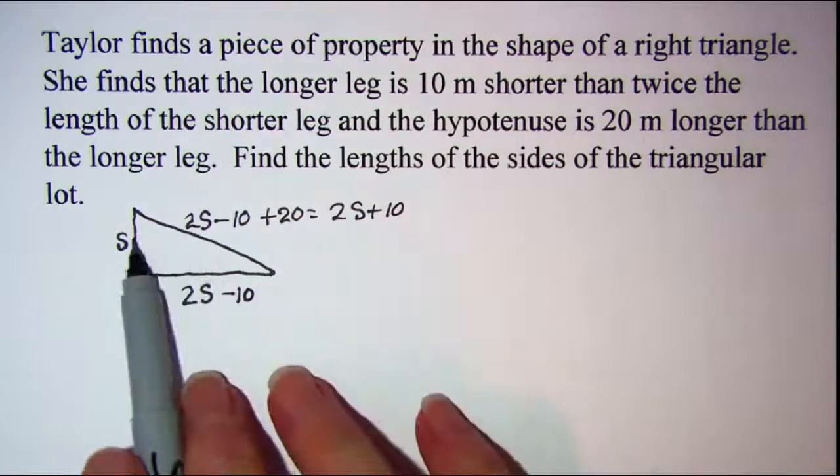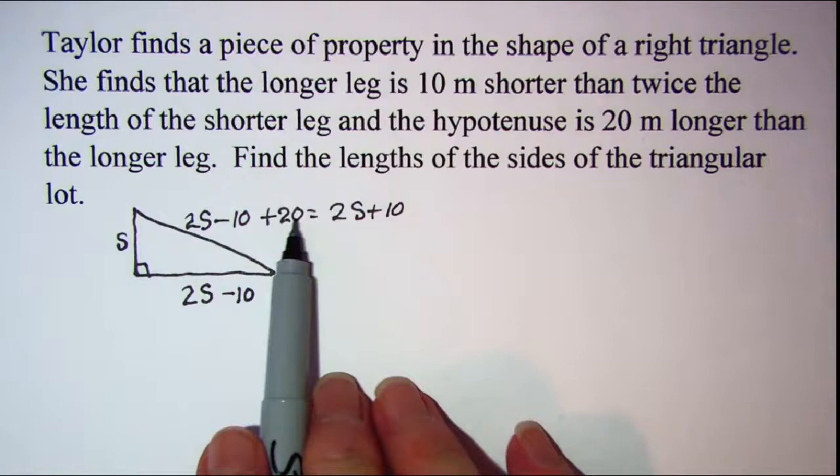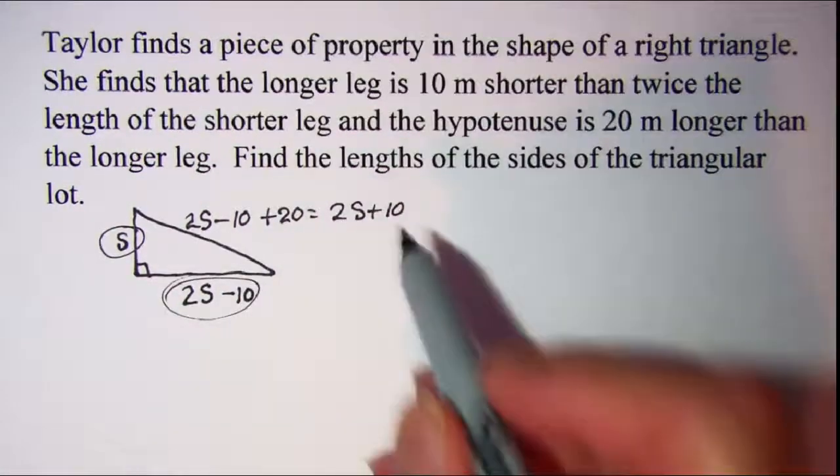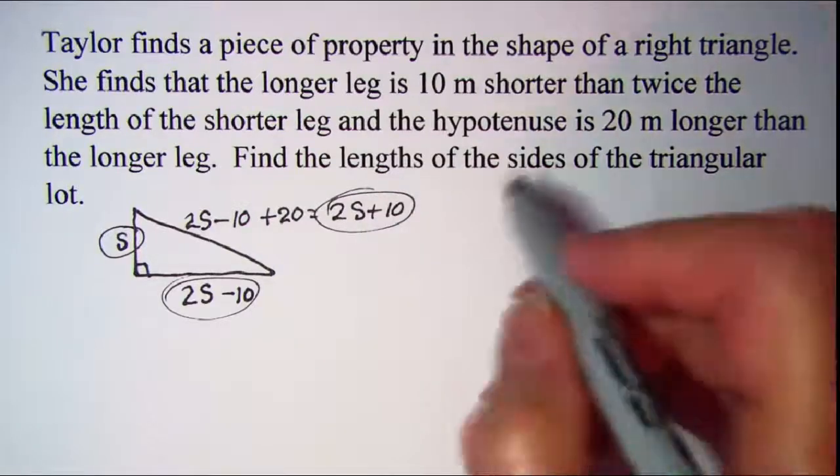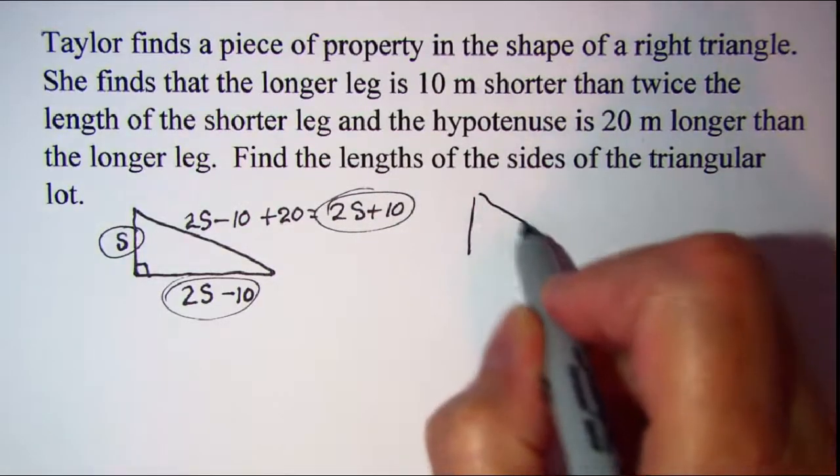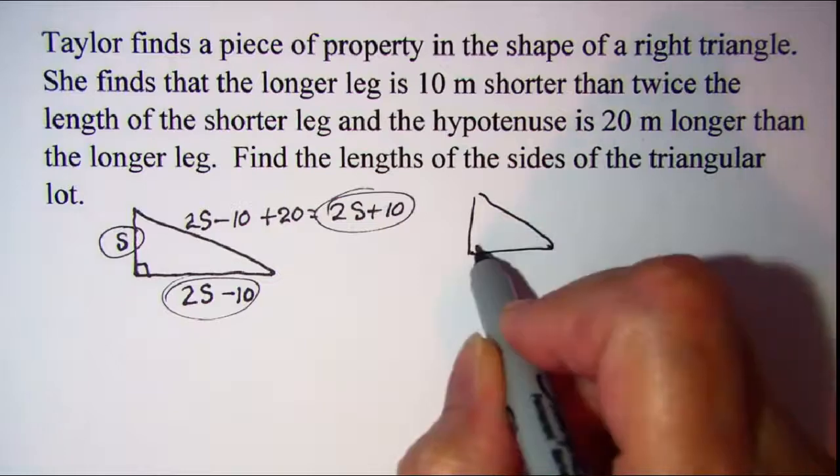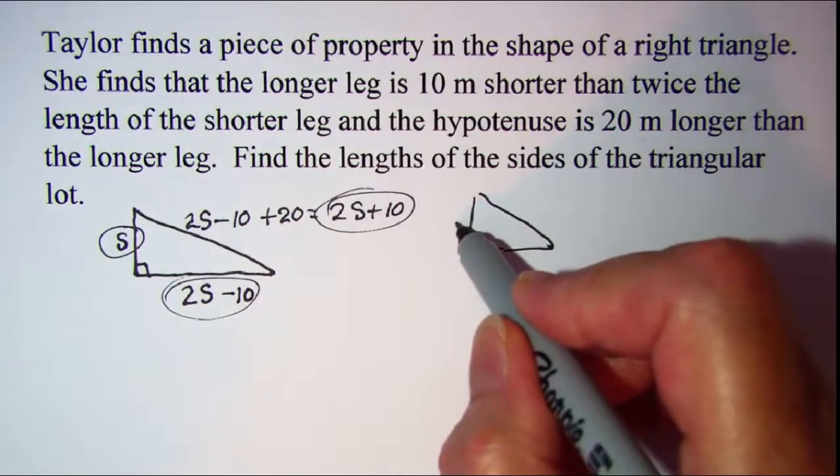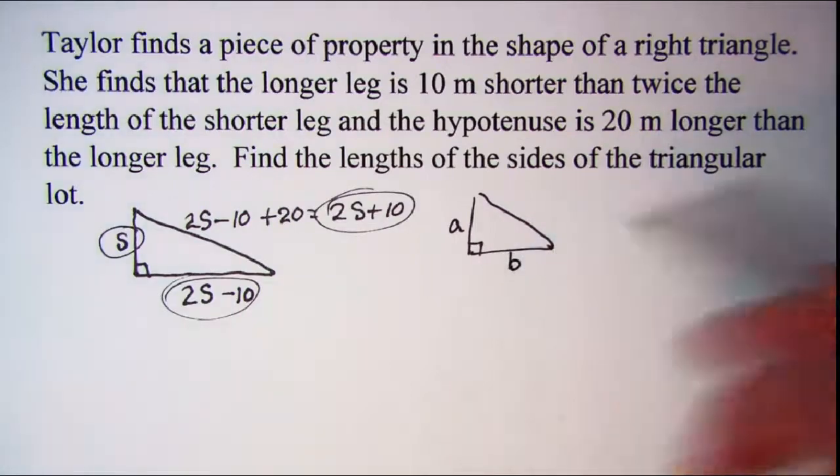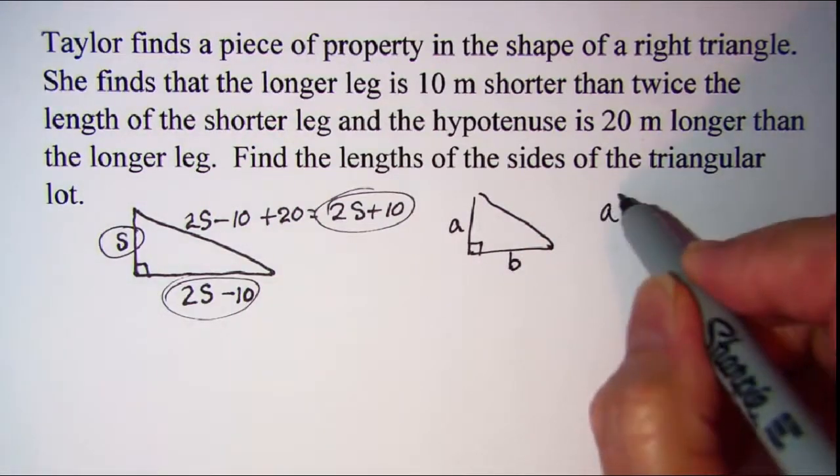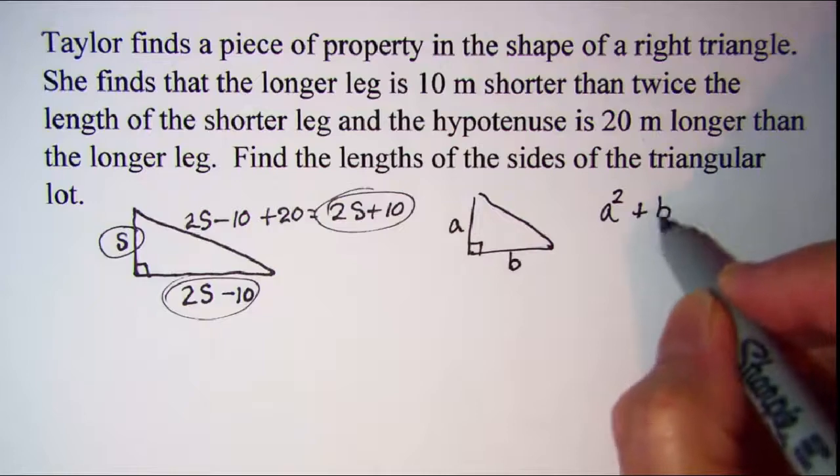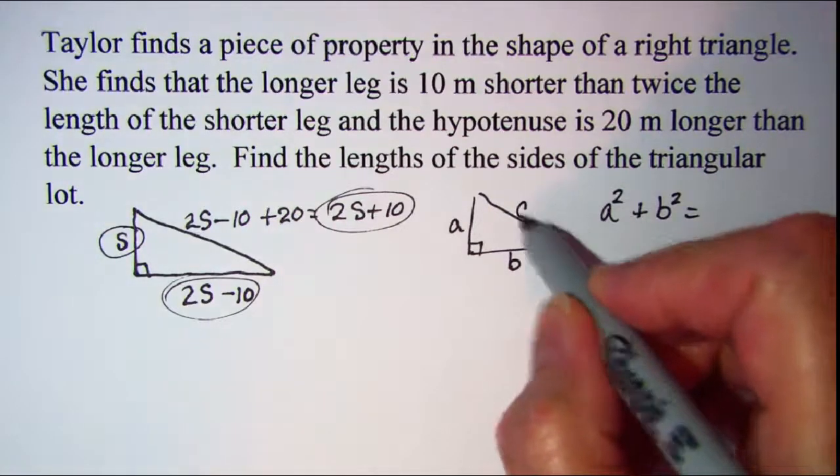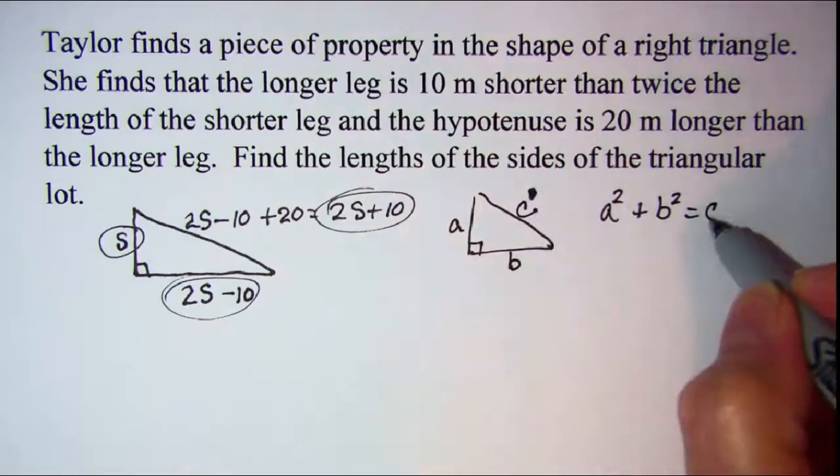So these are the three expressions that I'm going to be working with for my right triangle. And we know that the Pythagorean theorem tells us that when we have a right triangle, the squares of the two legs, so a squared plus b squared, is equal to the square of the hypotenuse, so c squared.